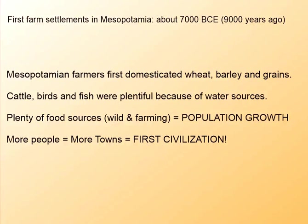Mesopotamian farmers grew wheat, barley, and grains. They also had an easier time growing cattle, birds, and fish, and there were plenty of them because of all these great water sources. Plenty of food sources meant population growth, and when you have more people and more towns, you get civilization.